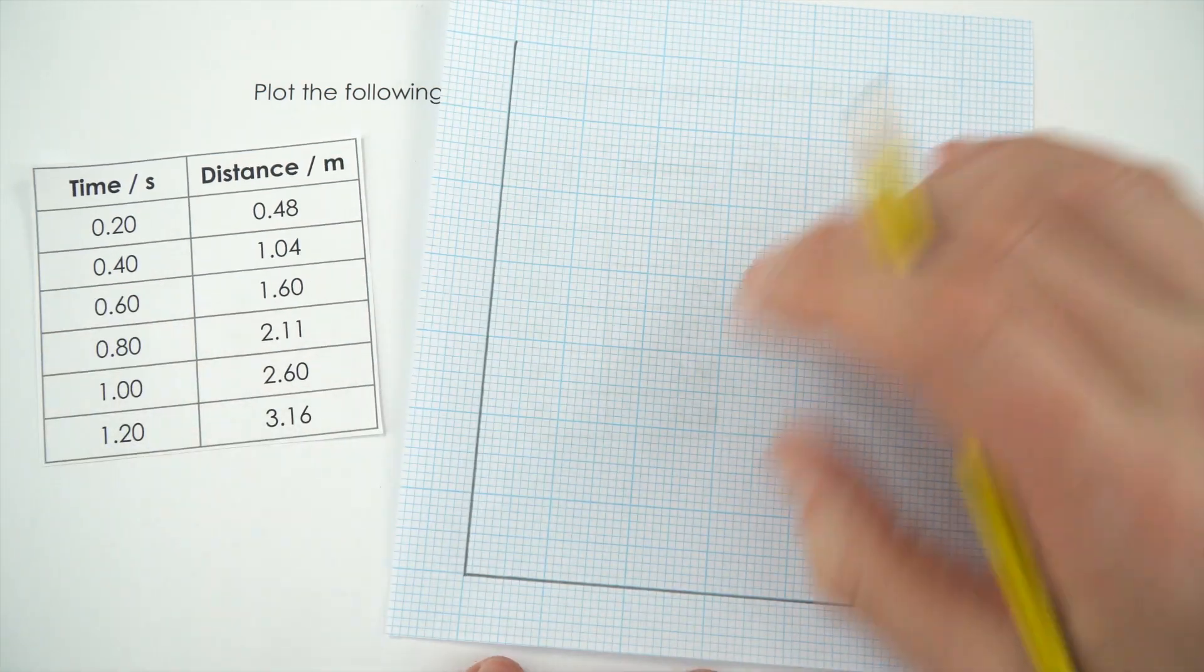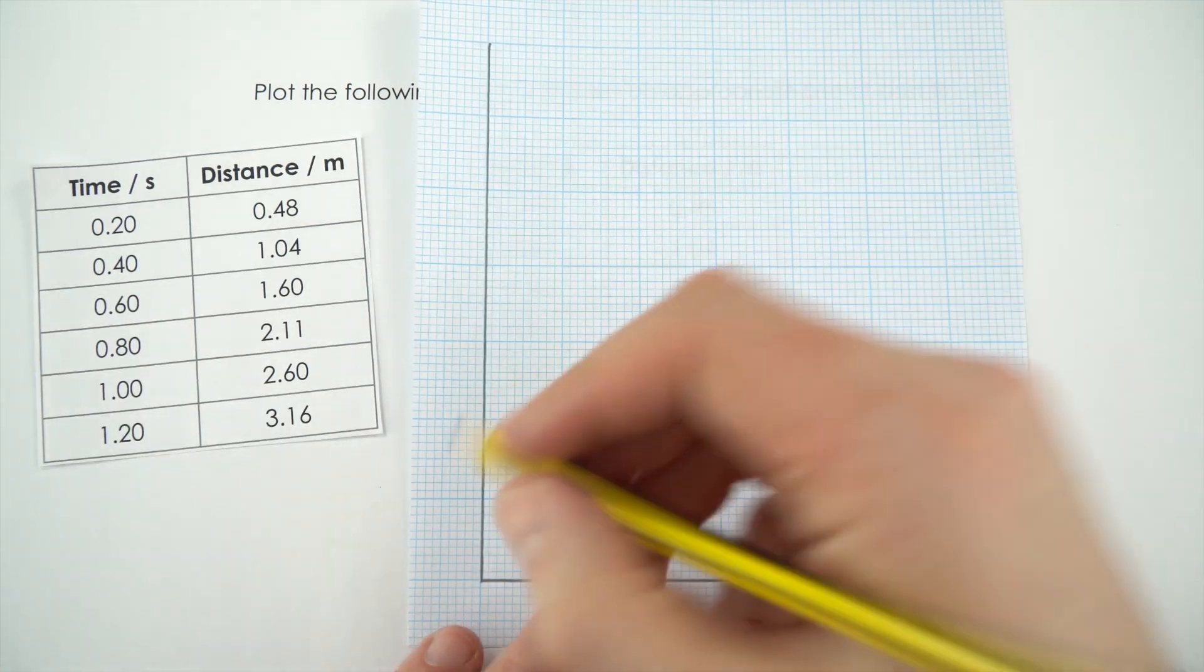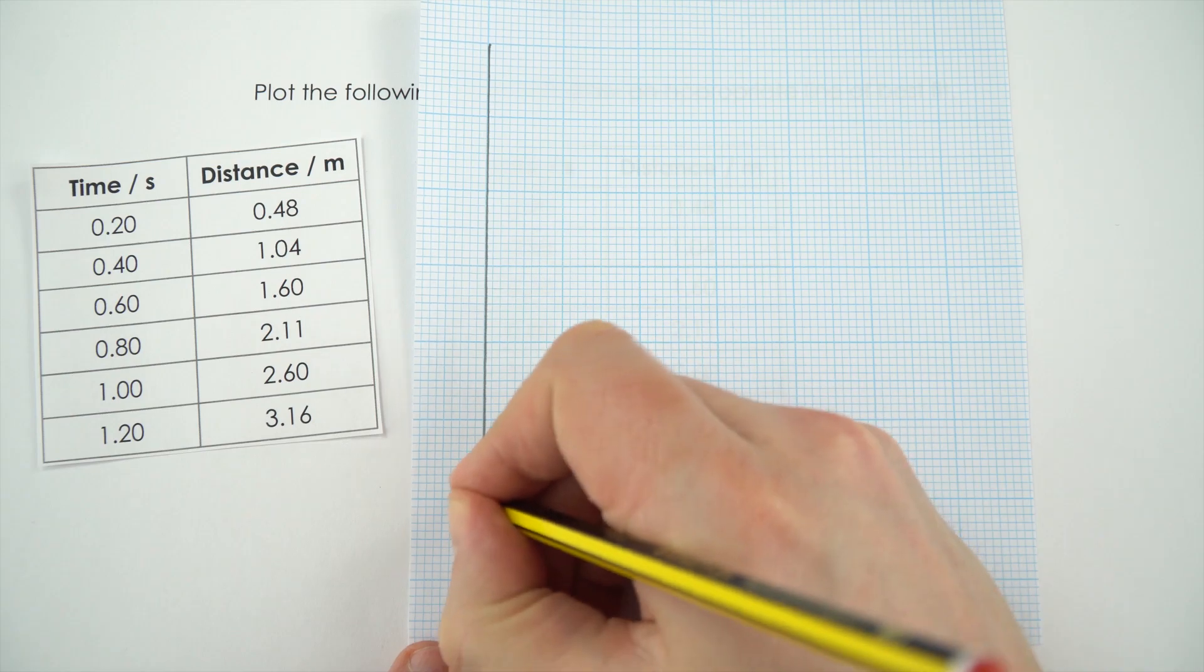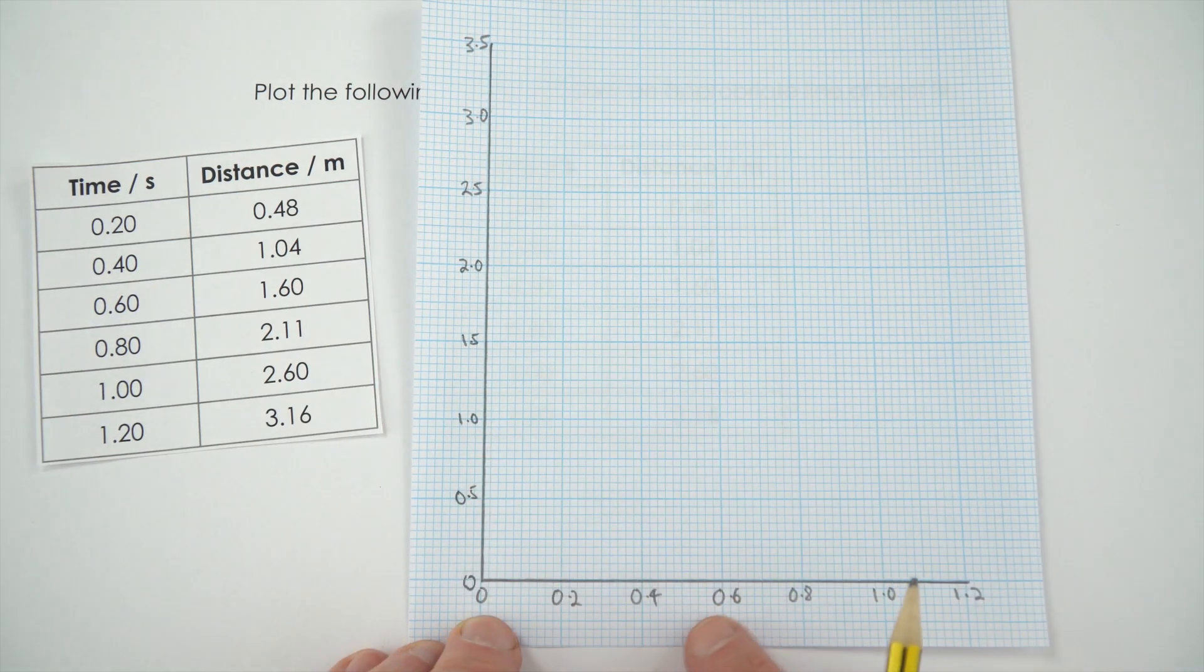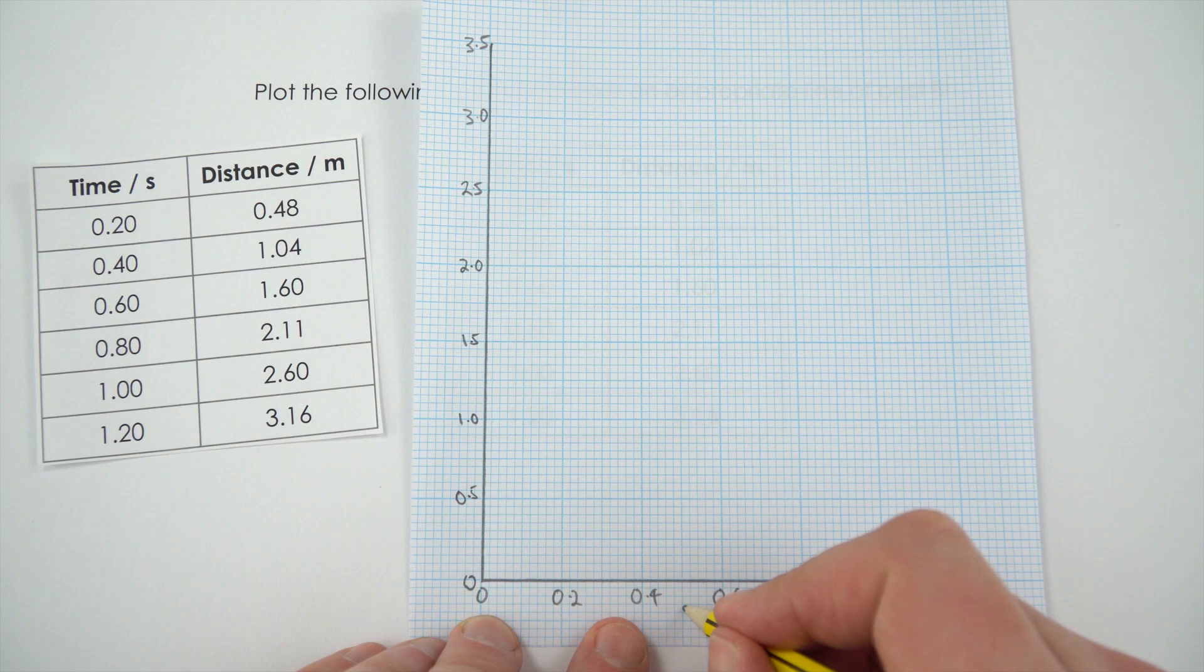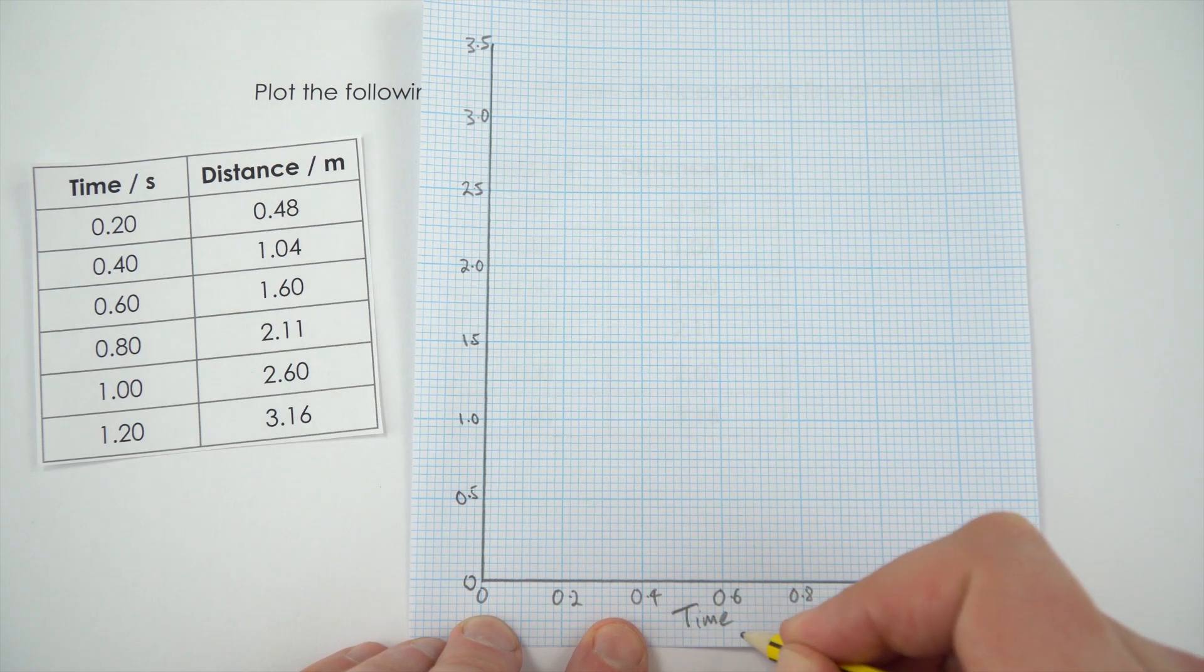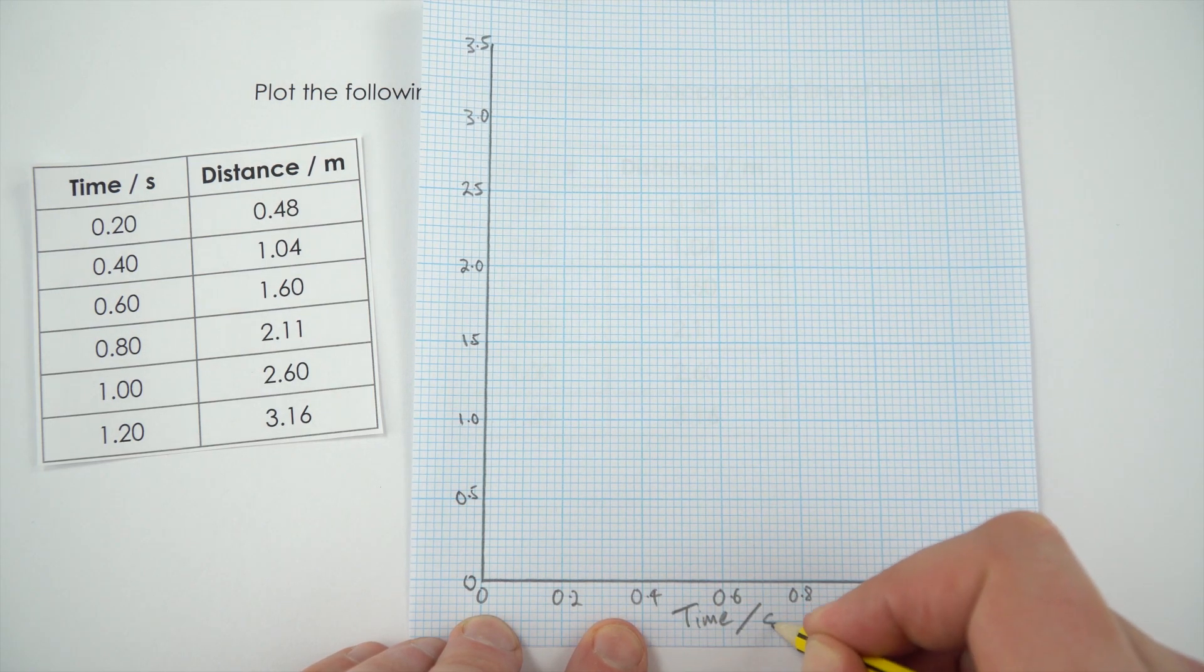All I need to do now is add the numbers to my axes and then label what these axes actually are, with both the quantity, in this case time, and also the unit that it's measured in, seconds.